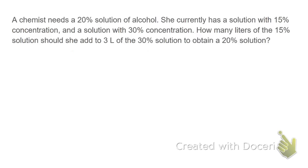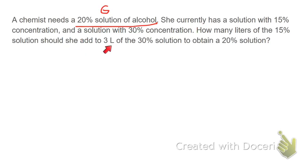Let's start with this example. A chemist needs a 20% solution of alcohol — that's their goal. She currently has a solution with 15% concentration and a solution with 30% concentration. How many liters of that first solution should she add to three liters of the second solution to create this 20% solution?